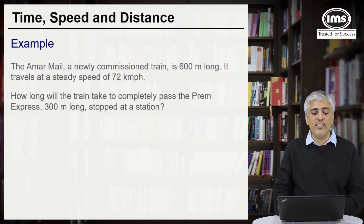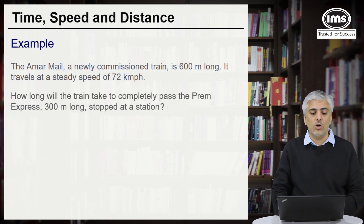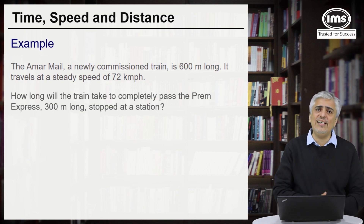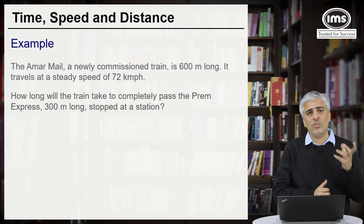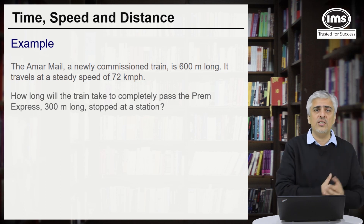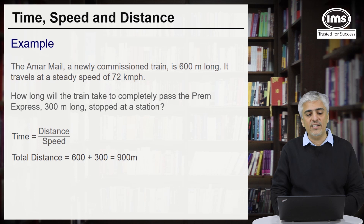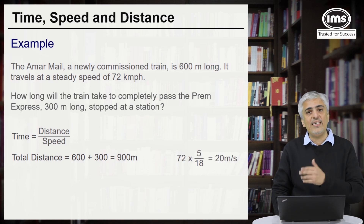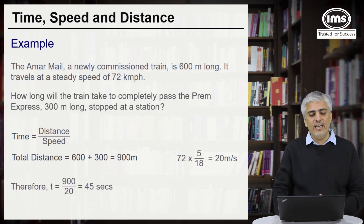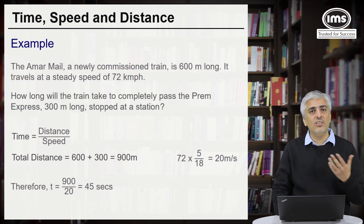How long will the Amarmail take to completely pass the Prem Express, which is 300 meters long and stopped at a station? This is exactly the same as the bridge example — whether crossing a bridge or a stationary train, the approach does not change. Total distance = 600 plus 300 = 900 meters. Speed = 72 km/h × 5/18 = 20 meters per second. Time taken = 900 divided by 20 = 45 seconds.